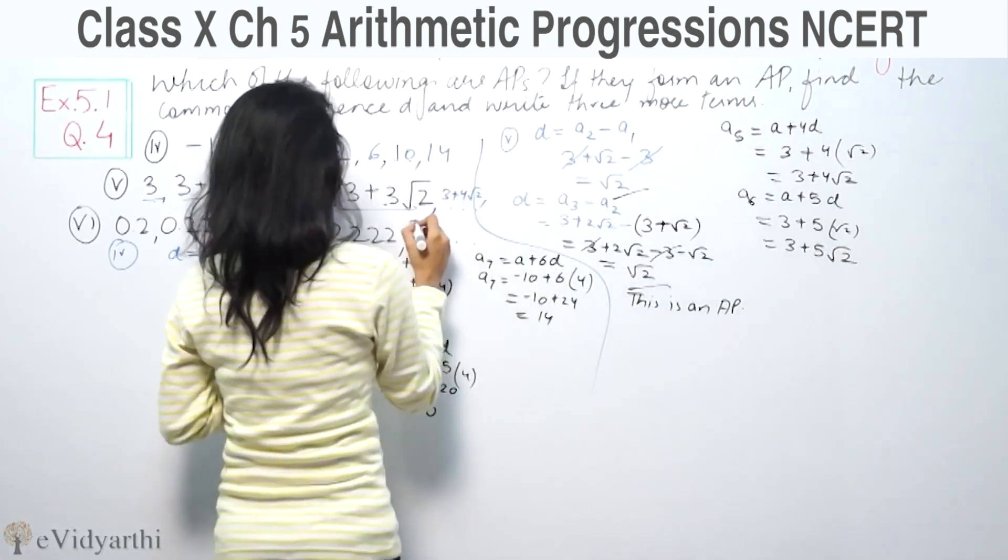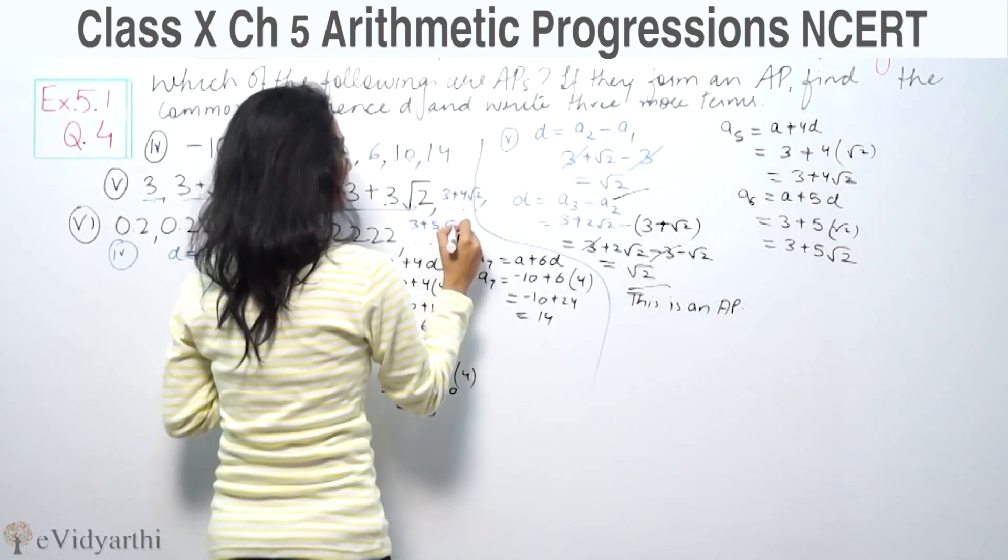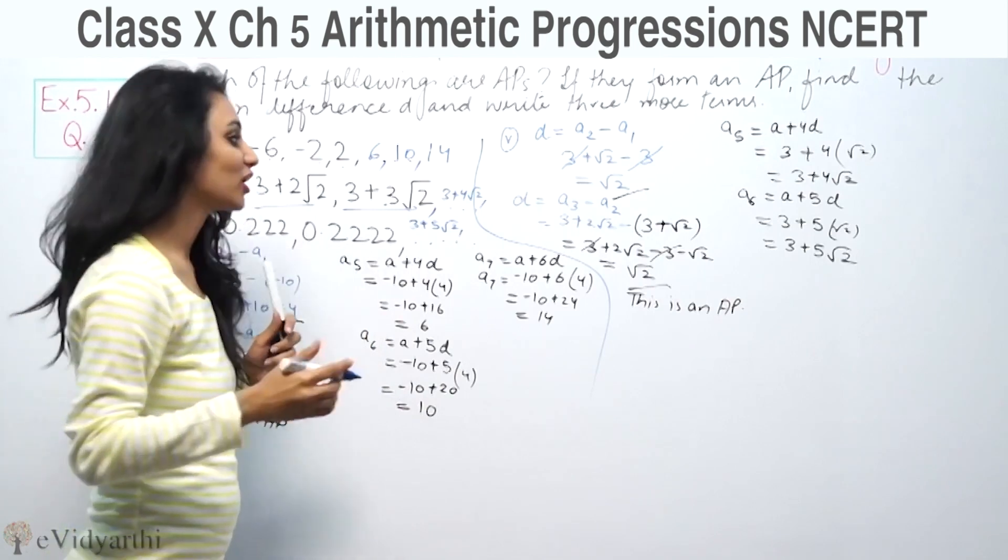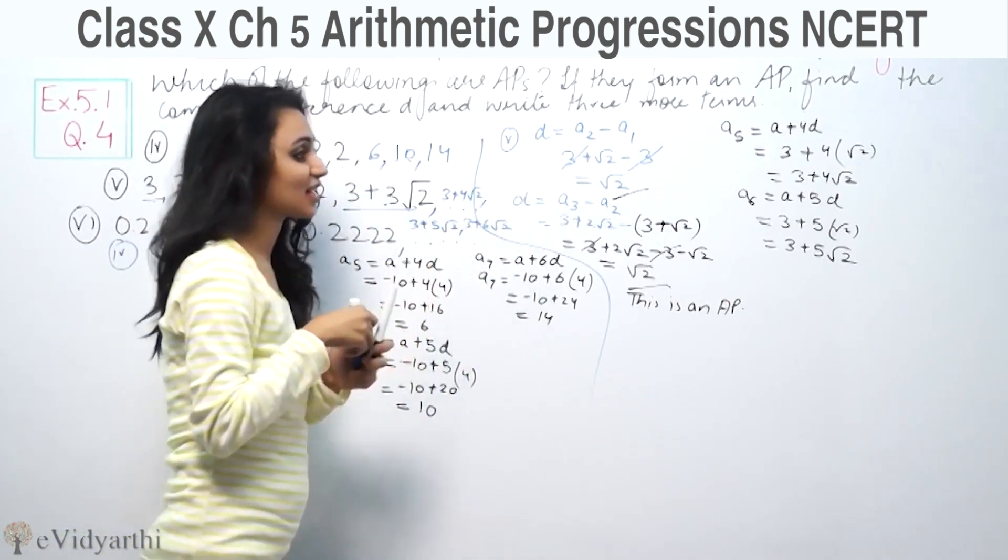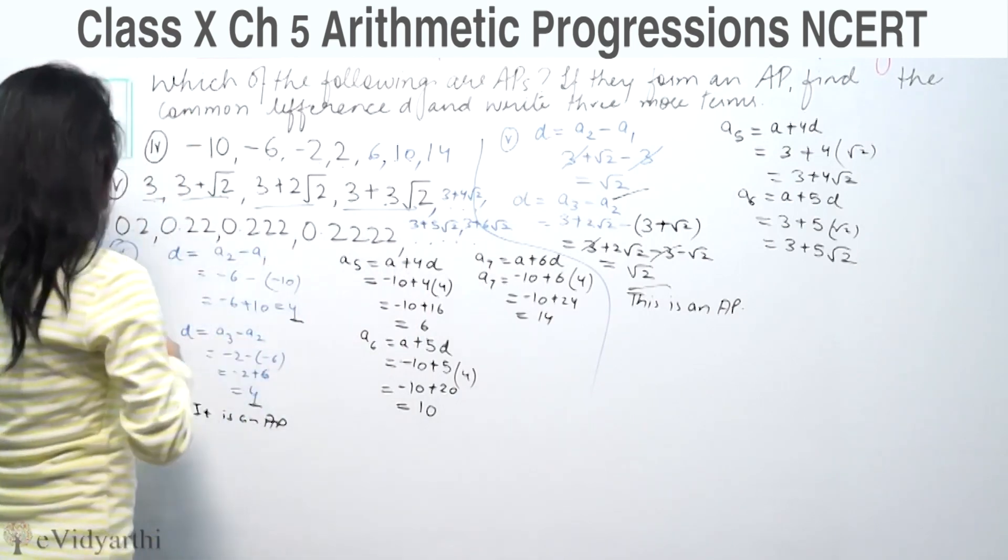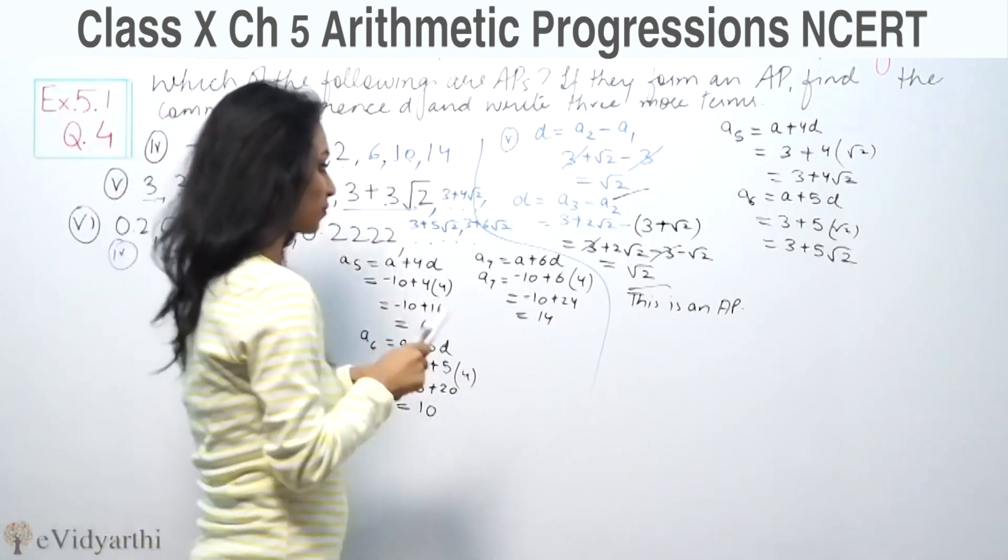Similarly, A7 equals A plus 6d equals 3 plus 6 root 2. So the next three terms are 3 plus 4 root 2, 3 plus 5 root 2, and 3 plus 6 root 2. Now let's check the last part, part (iii).